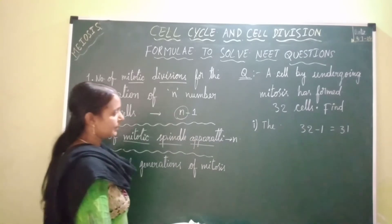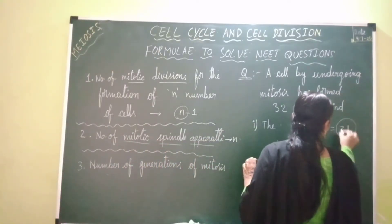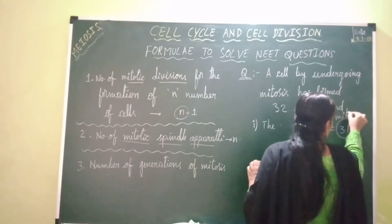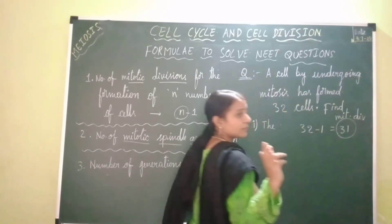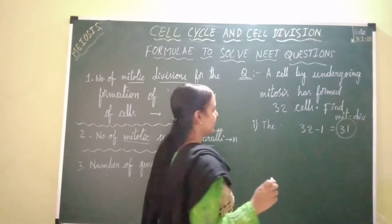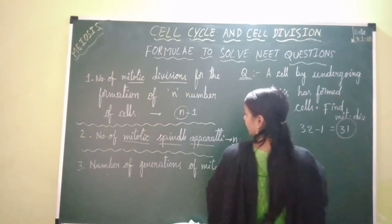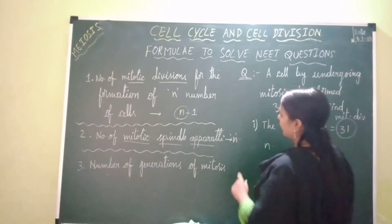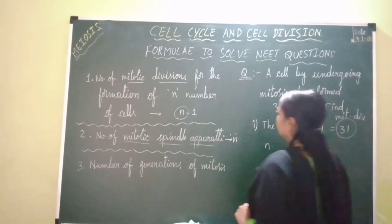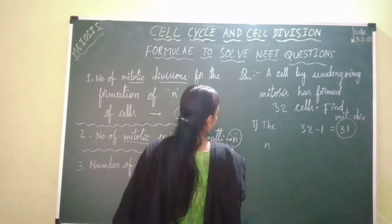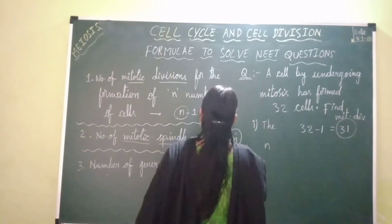How many mitotic spindle apparatus are required? 31. Because 31 mitotic divisions have occurred, and for one mitotic division, one spindle apparatus is needed. So the answer is 31. The formula to use is n, where n equals the number of mitotic divisions.